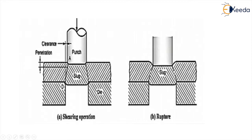As the punch moves further inside the die, the amount of compression goes on increasing more than the elastic elongation. In the same material, we have at one portion a huge elastic compression and at another portion the elastic elongation. Because of these differences, the material is experiencing shear stresses.